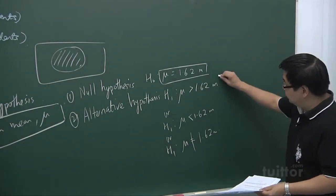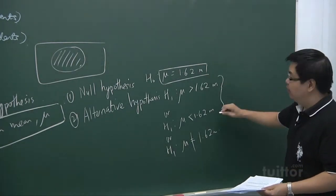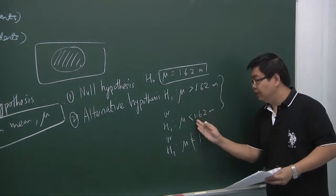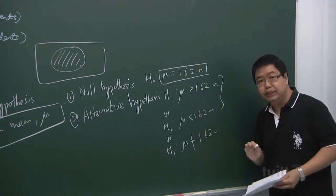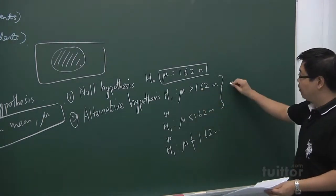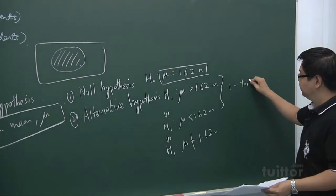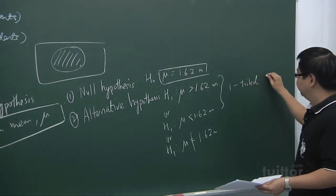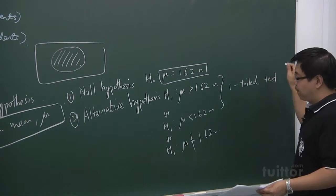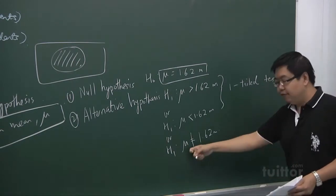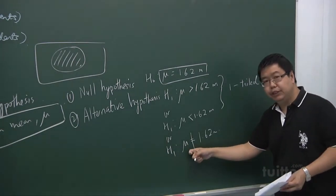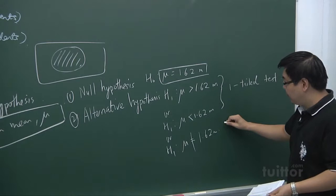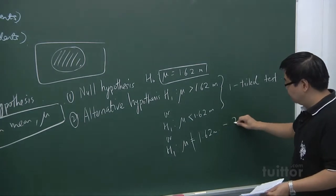This type of test, where you're testing for a definite increase or definite decrease, is what we call a one-tail test — one-sided. And for the situation when we're testing for any change, we call it a two-tail test.